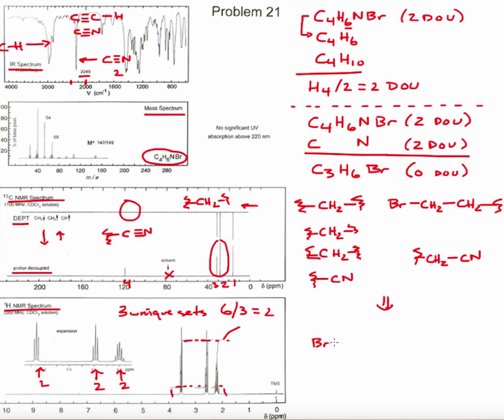So bromine-CH2-CH2, here's the third CH2, and then our nitrile. This gives us three unique sets of hydrogens, each bearing three unique carbons, each bearing two hydrogens.